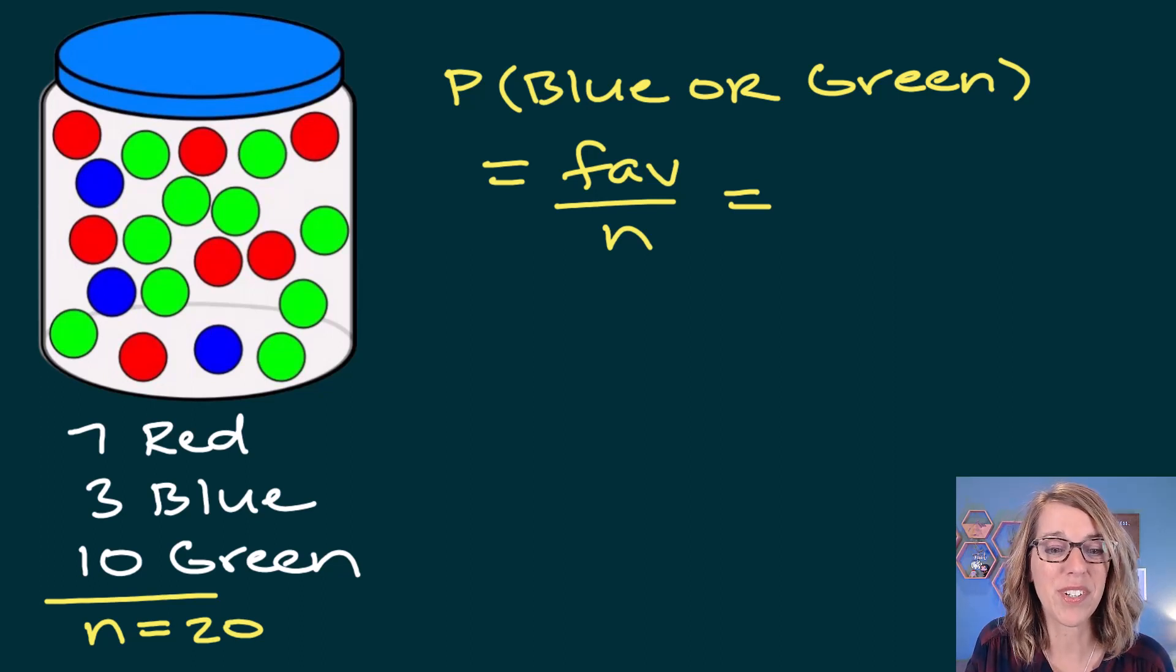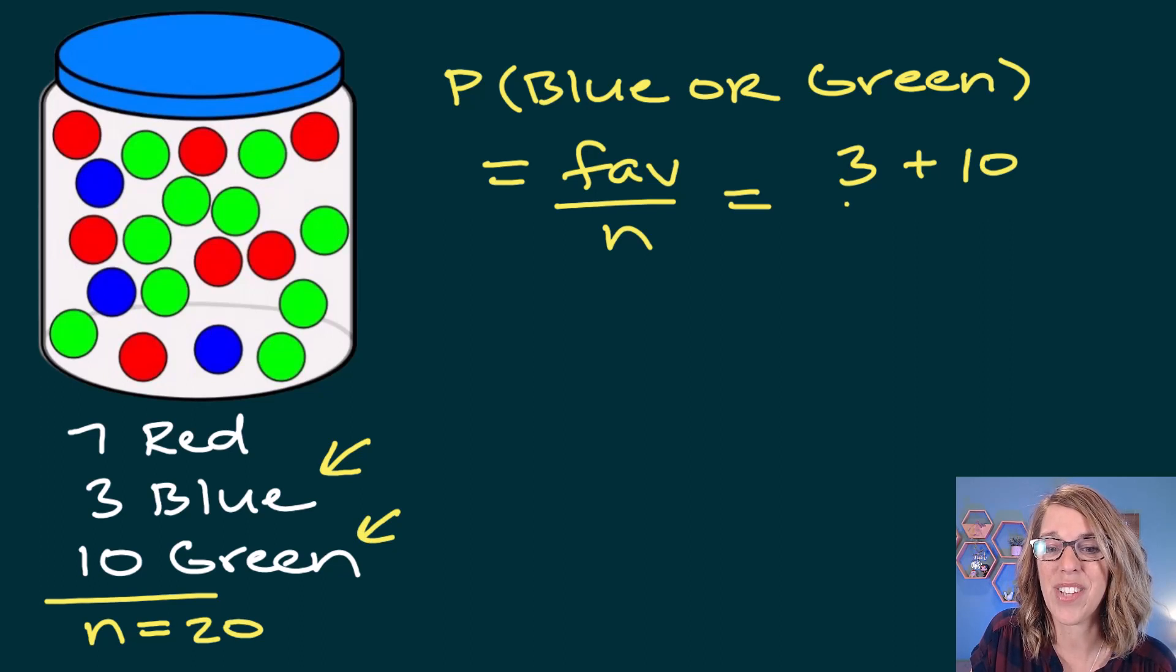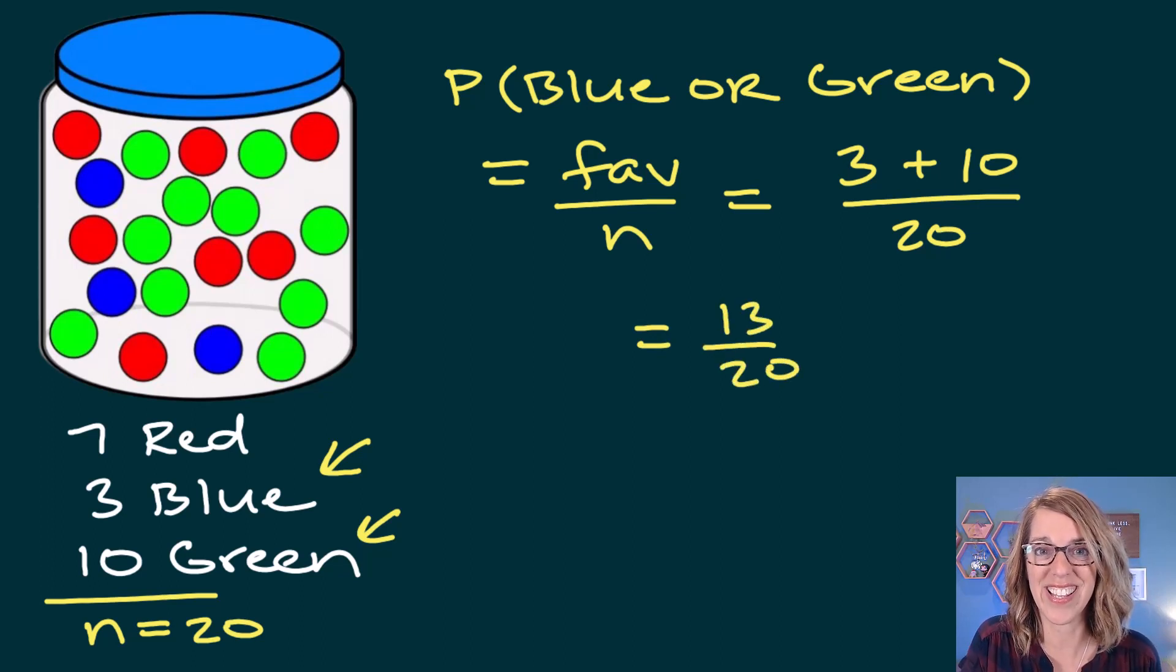Doing my favorable outcomes first, I would be happy with a blue marble. There are three of those. I'm going to add to those all of the green ones, because those are also favorable outcomes, and I've got 10 of those. So I've got 3 plus 10 divided by the total number of marbles, which is 20. Adding that up, I get 13/20.